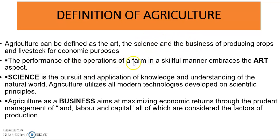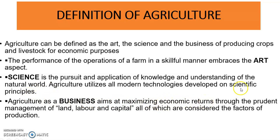The performance of the operations of a farm in a skillful manner embraces the art of agriculture. The science is the pursuit and application of knowledge and understanding of the natural world. Agriculture utilizes all modern technologies developed on scientific principles. And agriculture as a business aims at maximizing economic returns through the prudent management of land, labor, and capital — these are factors of production.